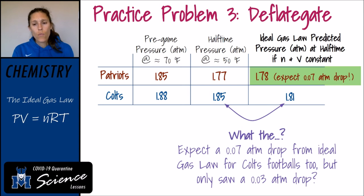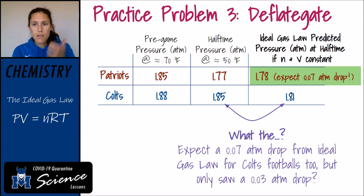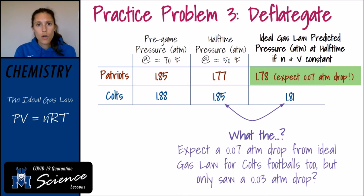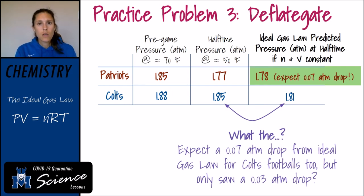So what's going on? If you just make the assumption that volumes stay constant and the temperature at halftime was 50 degrees Fahrenheit, you actually find that the Patriots' footballs seem to be what was expected, while the Colts' footballs seem to be the anomaly.